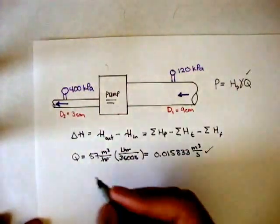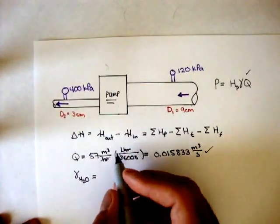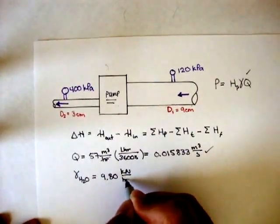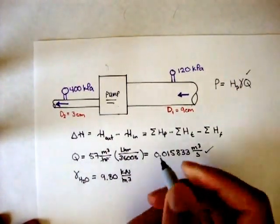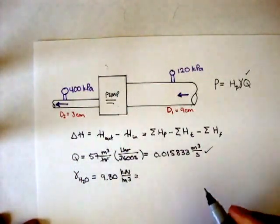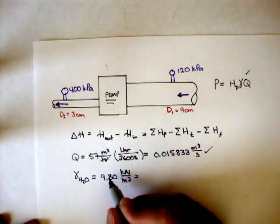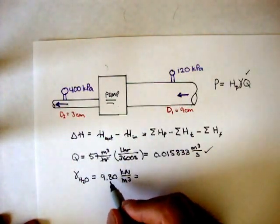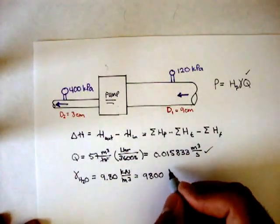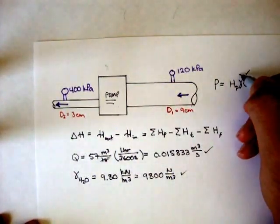And we know that gamma of H2O, or gamma of water, at 20 degrees Celsius is about 9.80 kilonewtons per meter cubed. The specific weight is about 9.8 kilonewtons per meters cubed. And we can convert that into newtons per meters cubed by multiplying 9.8 by 1,000, and we get 9,800 newtons per meters cubed. Now we have gamma.